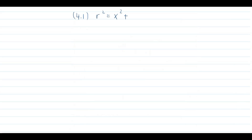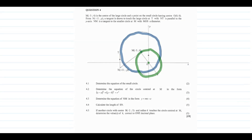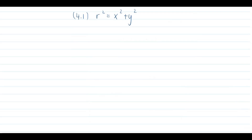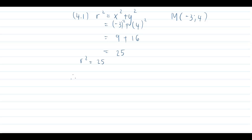We are told that point M is a point on the small circle, so we simply substitute that point into our equation. Point M has coordinates (−3, 4), so substituting: (−3)² + (4)² = 9 + 16 = 25. Therefore r² = 25, making the equation of our small circle x² + y² = 25.